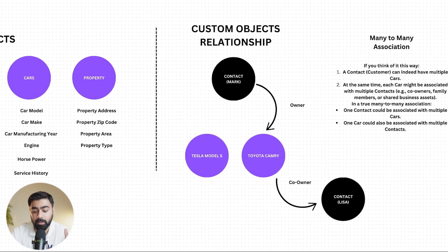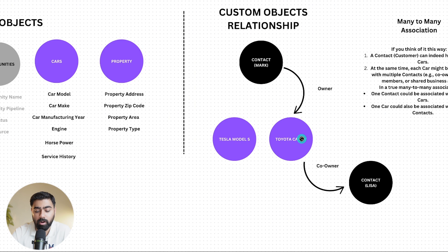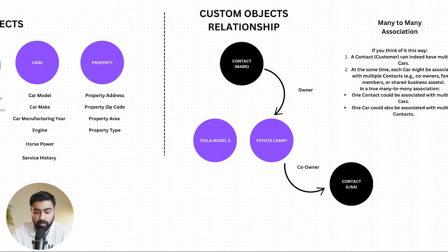When we talk about custom object relationships, it can be one-to-many or many-to-many. If we have a cars object with a Tesla Model S and a Toyota Camry, each car would have attributes like make, manufacturing year, engine, and horsepower. Contact Mark is an owner of a Toyota Camry, but he also has a co-owner — his wife Lisa. We can link two contacts to this Toyota Camry at one time, establishing a many-to-one relationship, which is possible using custom objects.